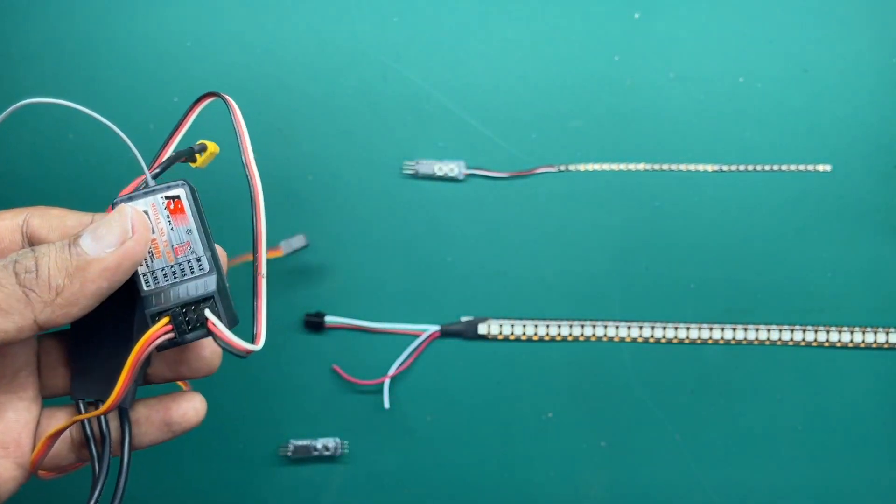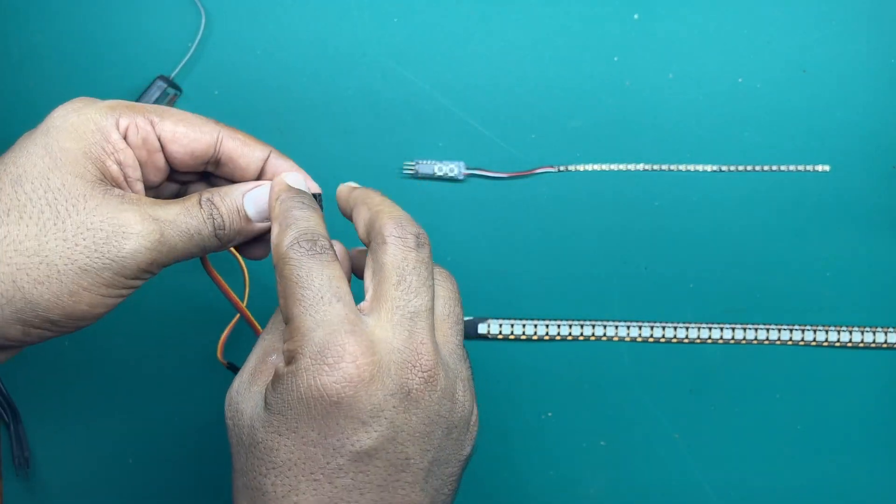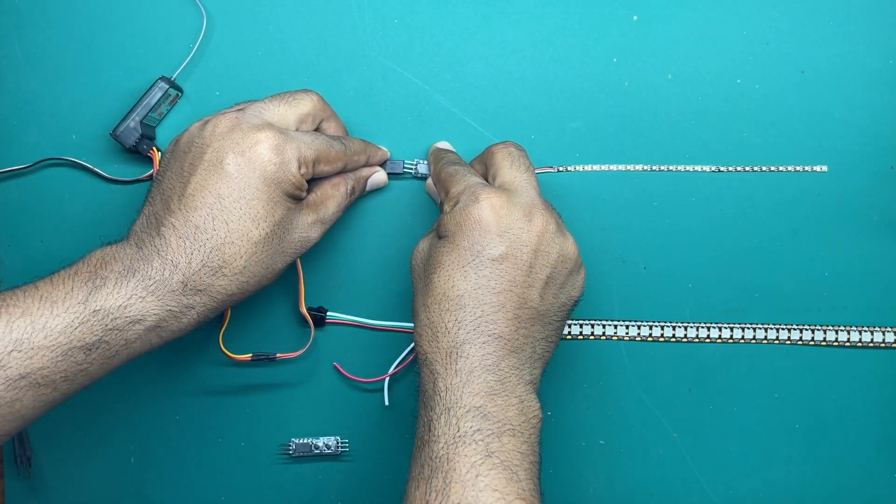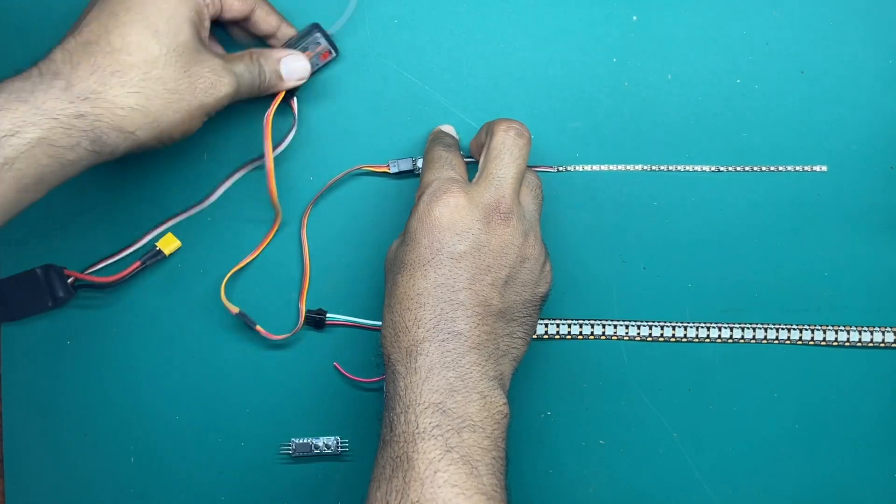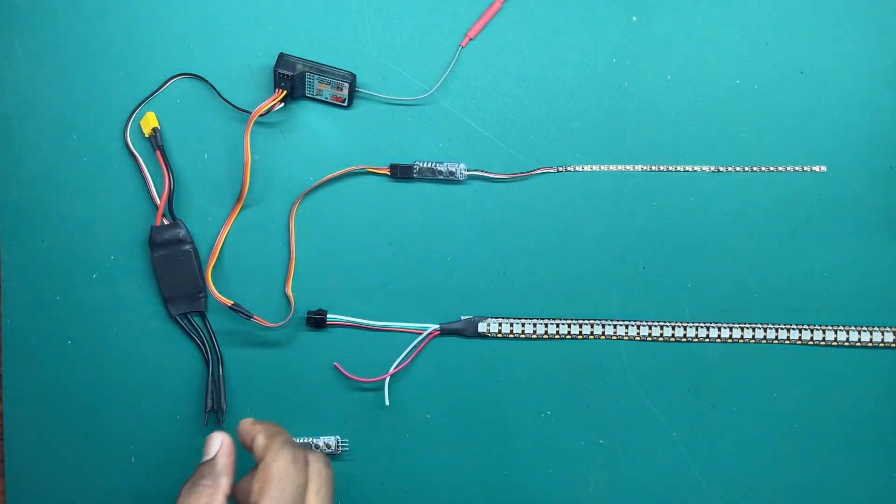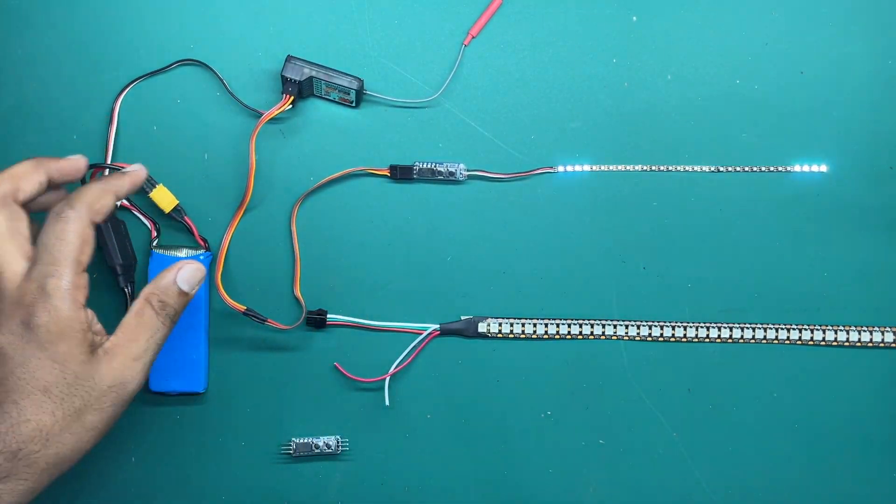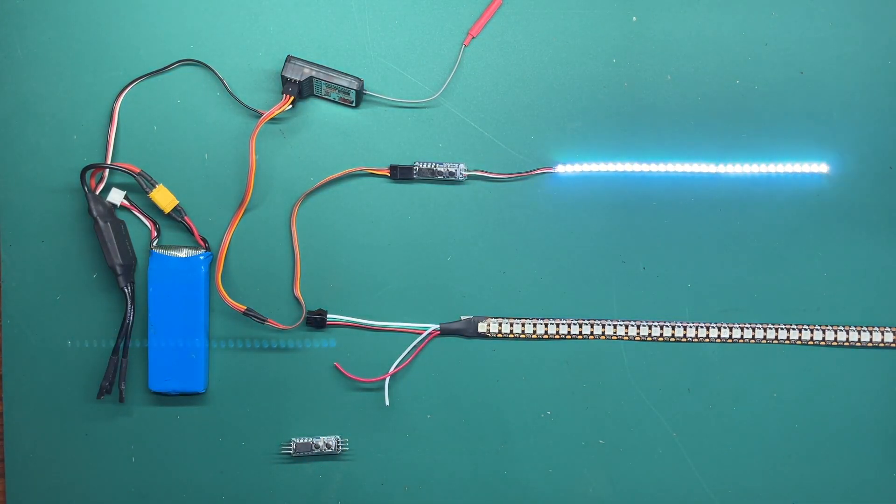Let me plug it and show you. I'll plug this cable ground side top like so and just keep the receiver like this and let me hook up a battery. Okay.